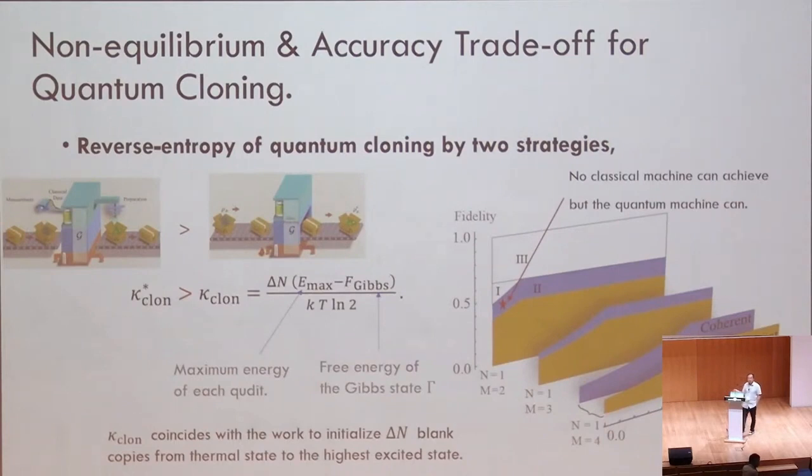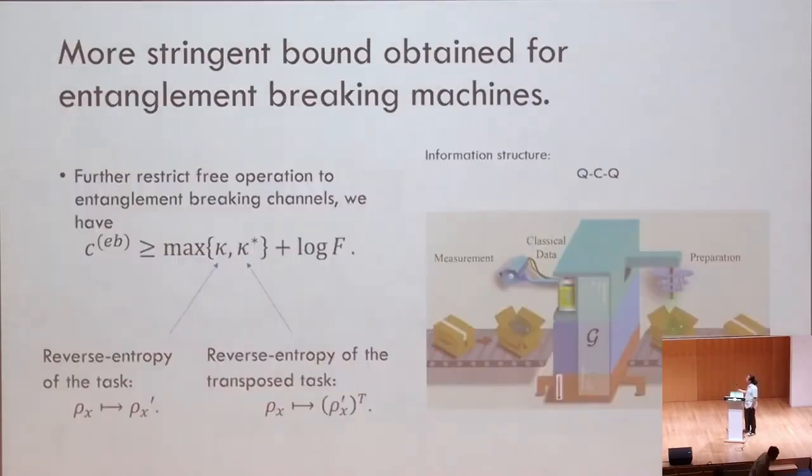And another question is, can you further explain why we have a reverse entropy in the bound, in the main results, the lower bound? Is there any physical intuition to have this reverse entropy term? Well, for the moment, this, to me, is a very nice symmetrical mathematical result. But the physical intuition, I cannot give you here. We can investigate later, but no, I do not have. Okay, so more questions.